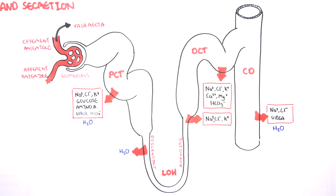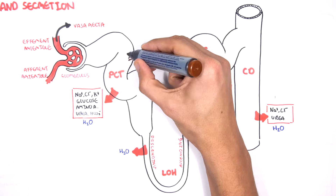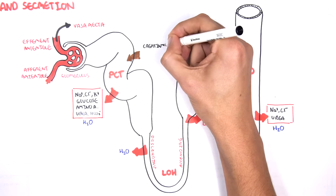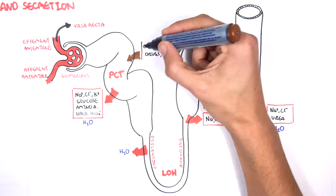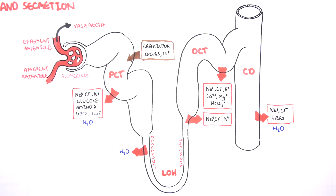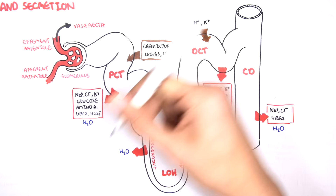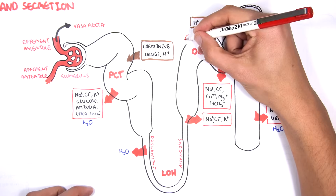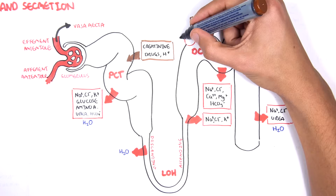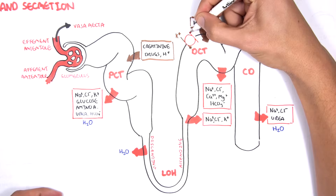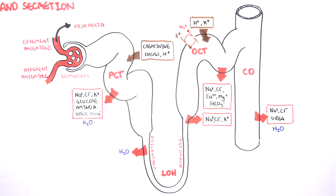Different segments of the nephron also allow for the secretion of things back inside the tubule from the circulation, specifically from the vasorecta. The proximal convoluted tubule allows for the secretion of creatinine, certain drugs, and hydrogen ions — which are the acidic ones. The distal convoluted tubule allows for the secretion of hydrogen ions and potassium. There is an important transporter responsible for the exchange of sodium and potassium, and this is also a site where diuretics have an effect.